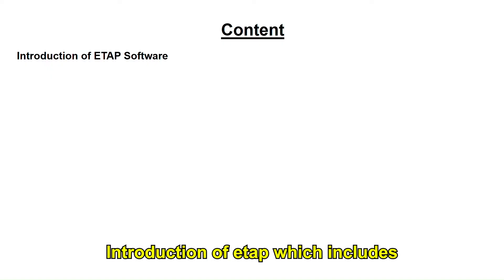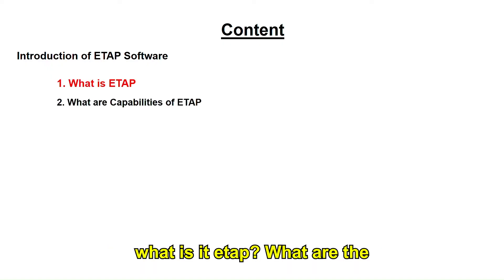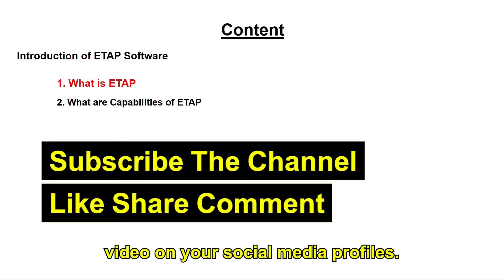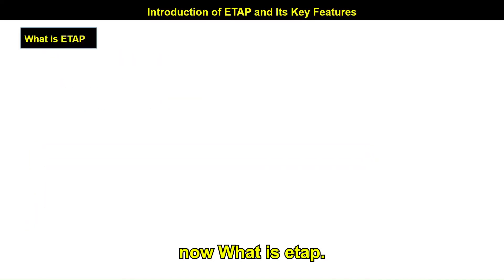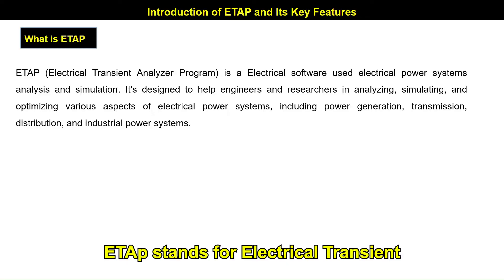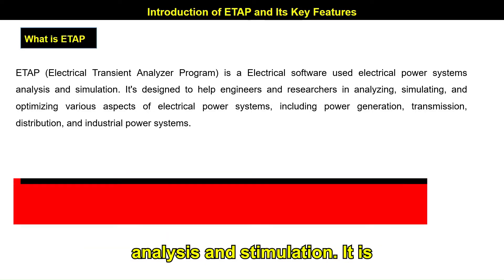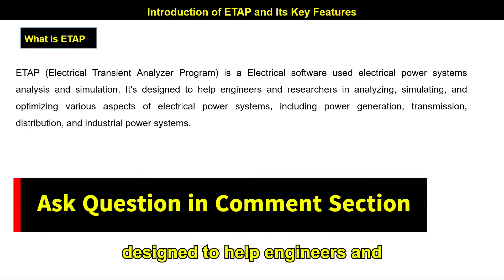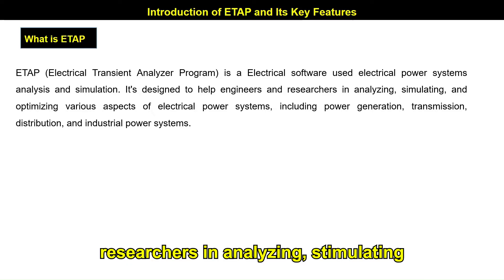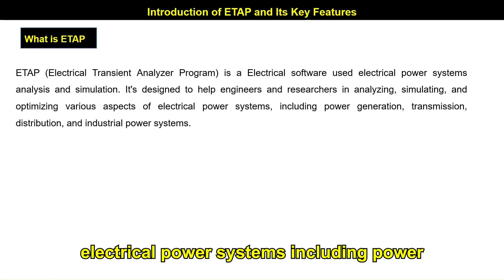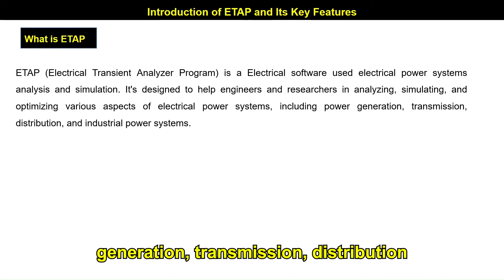Today's lecture includes what is ETAB and what are the capabilities of ETAB in detail. Before starting, please subscribe to the channel, like and share the video on your social media profiles. ETAB stands for Electrical Transient Analyzer Program. It is an electrical software used in electrical power system analysis and simulation, designed to help engineers and researchers in analyzing, simulating, and optimizing various aspects of electrical power systems.